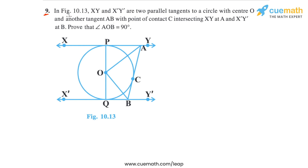Question 9 of this exercise says: in figure 10.13, XY and X'Y' are two parallel tangents to a circle with center O. In the figure, there is a circle with center O, and XY and X'Y' are the two parallel tangent lines. Another tangent AB with point of contact C intersects XY at A and X'Y' at B.